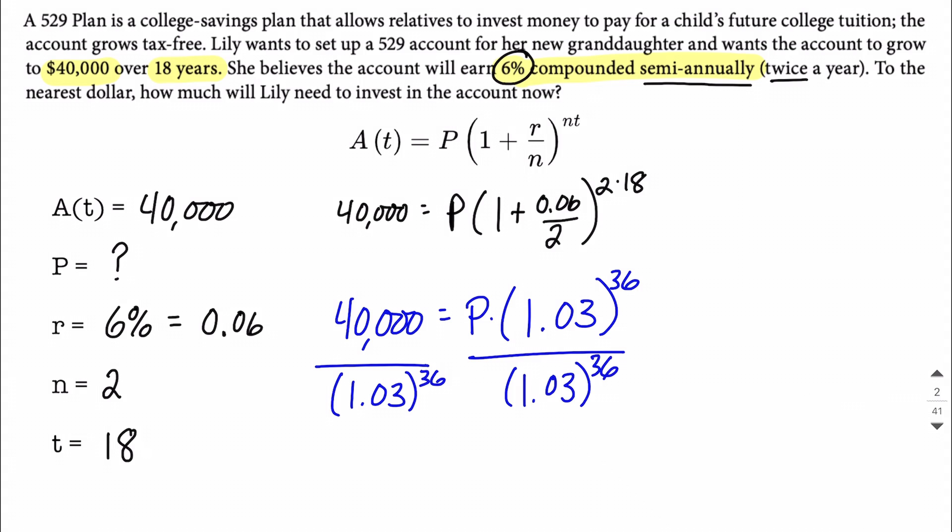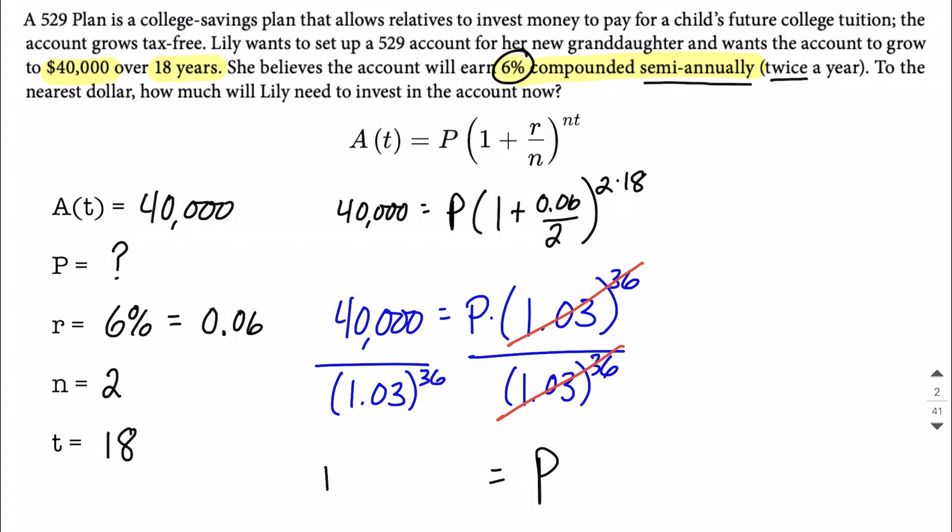Because that'll give us the most accurate answer possible. So in this case, on the right-hand side, we're going to notice that we were multiplying and dividing by the same value, so we're going to get P on the right-hand side all by itself. The left-hand side, hopefully we can get this in our calculator, $13,801.30.